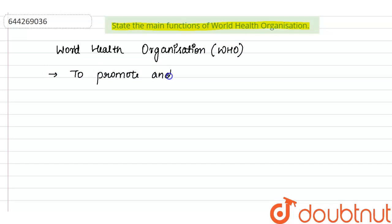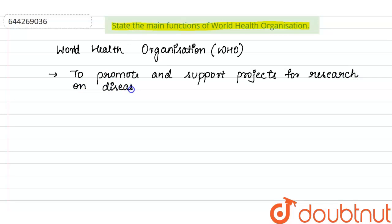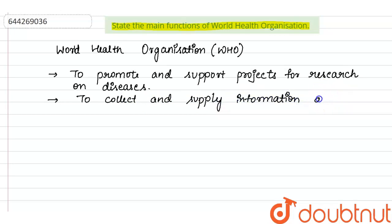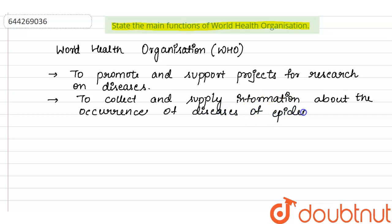First, to promote and support projects for research on diseases on a global scale. Second, to collect and supply information about the occurrence of epidemic diseases — for example, cholera, plague, etc.